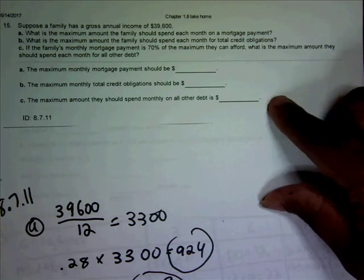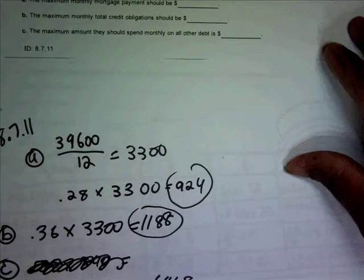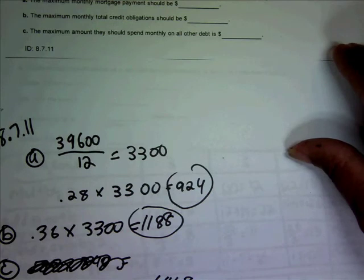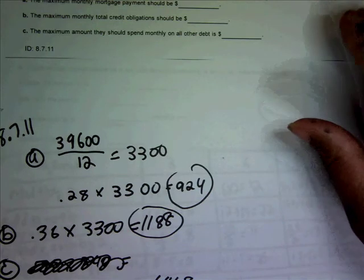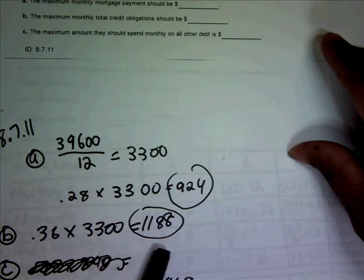So the credit obligations, they should only spend no more than 36% of their monthly income. So 0.36 times $3,300 is $1,188.